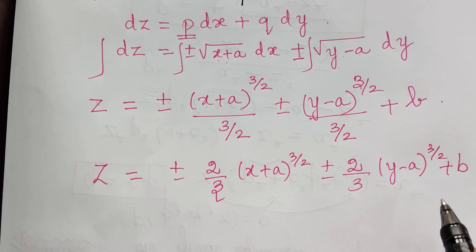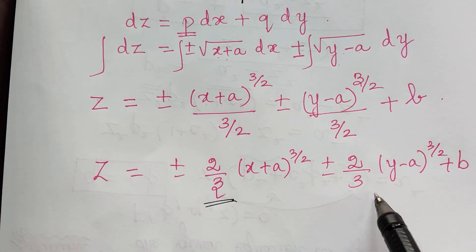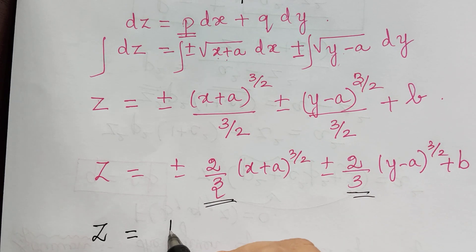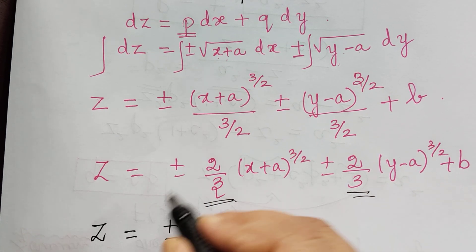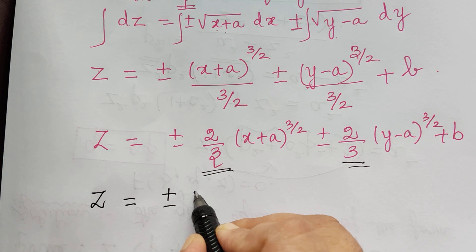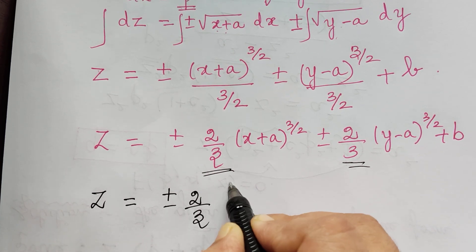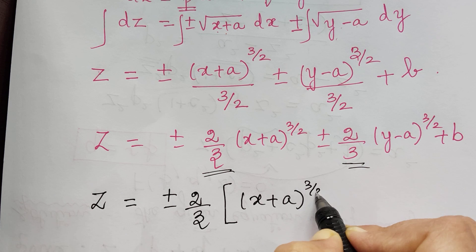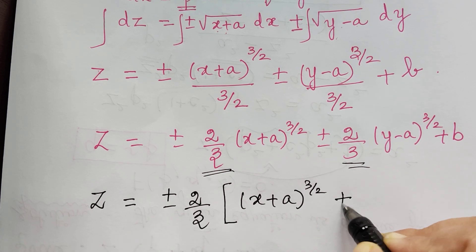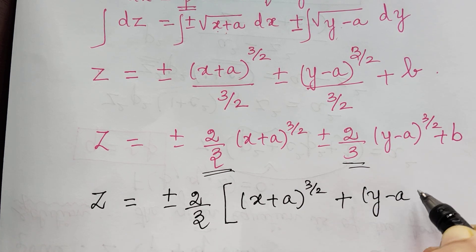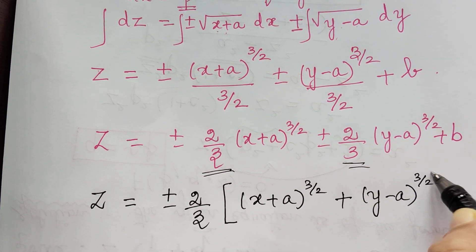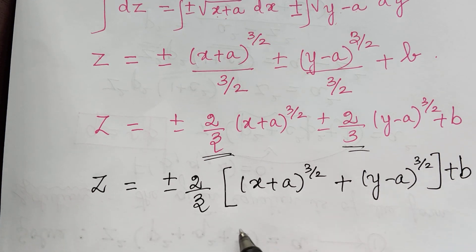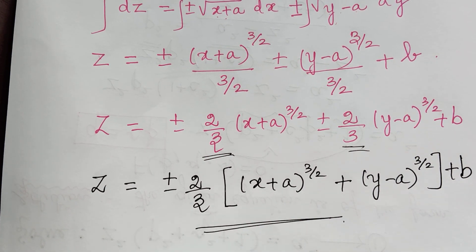We see that 2/3 is common in these two terms, so it can be taken out and written as plus or minus 2/3, and within the bracket we have x plus a the whole power 3/2 plus y minus a the whole power 3/2, plus b. This is the required complete solution of the given problem.